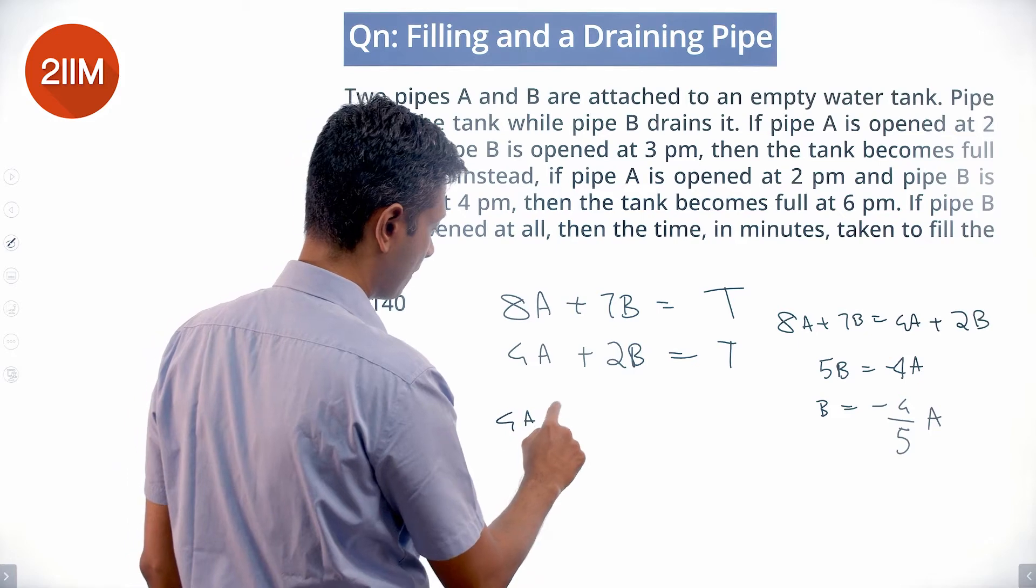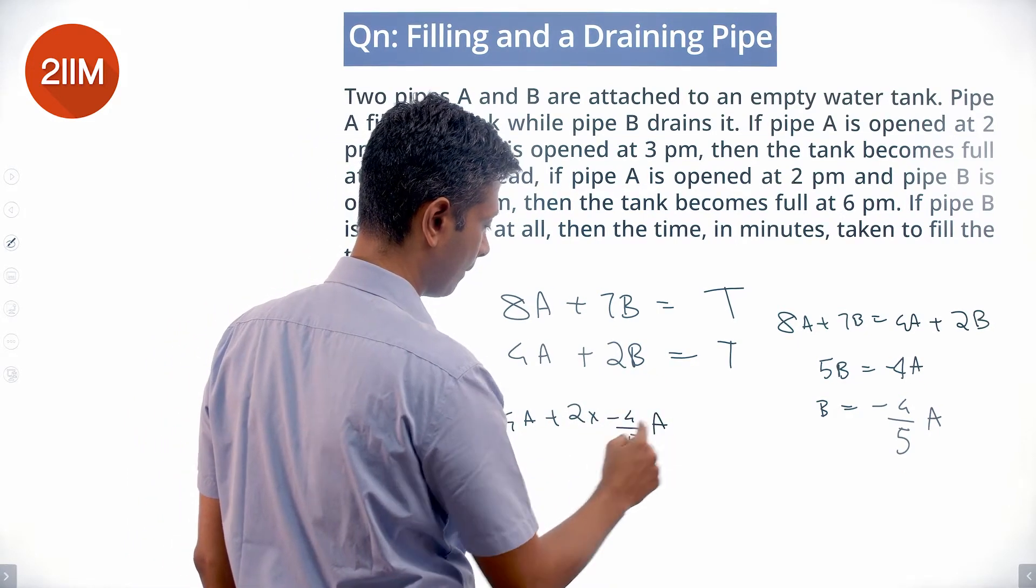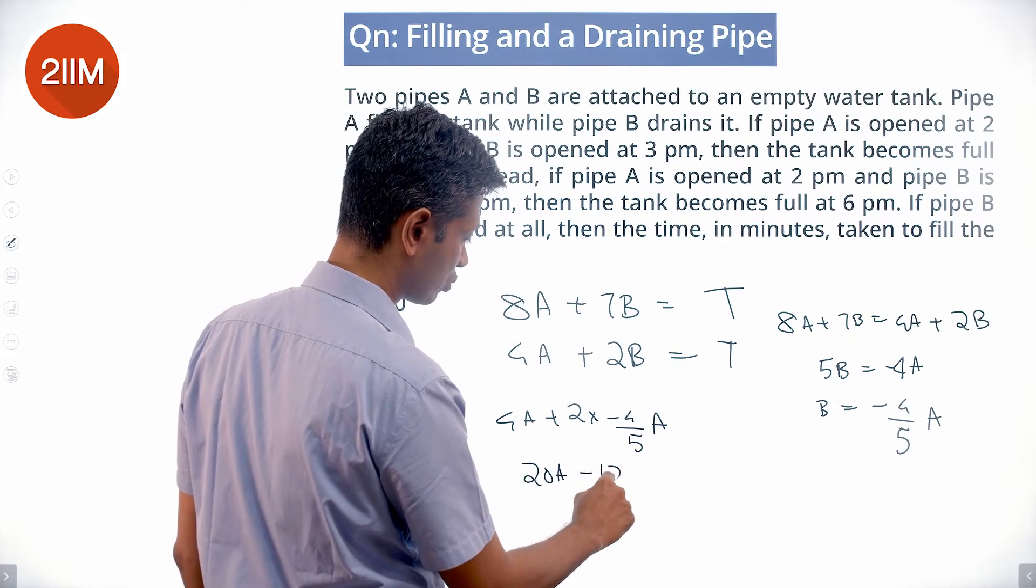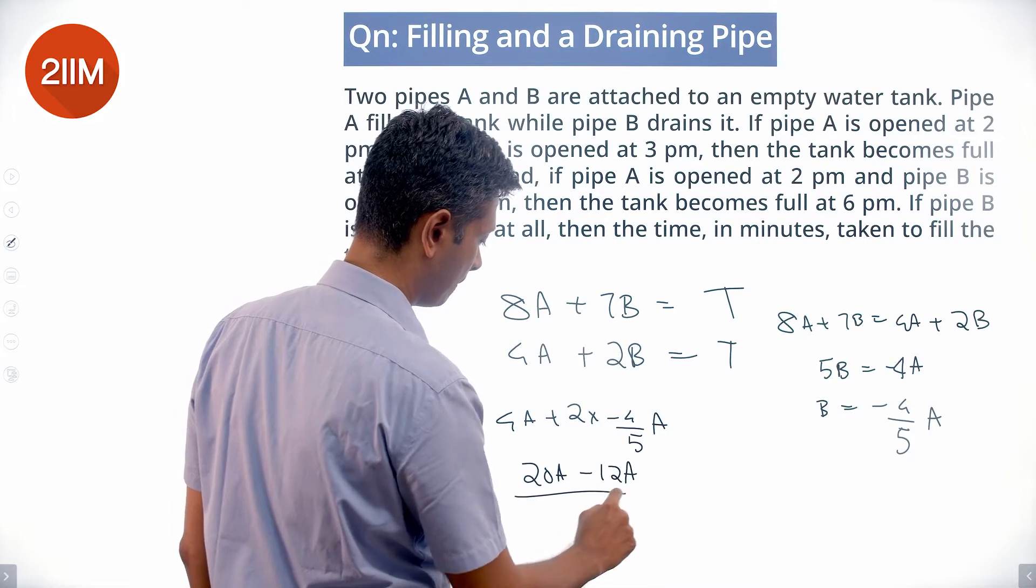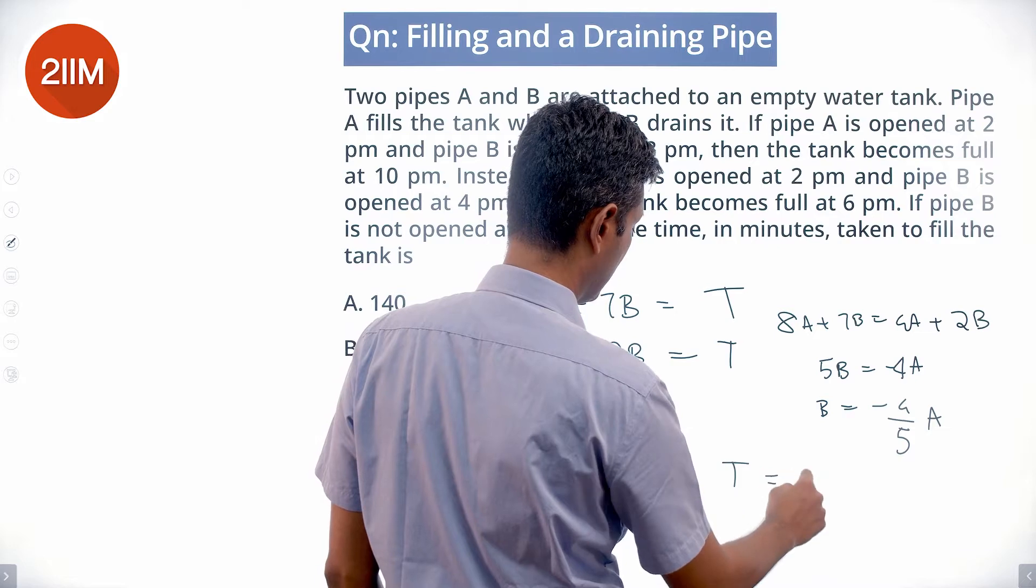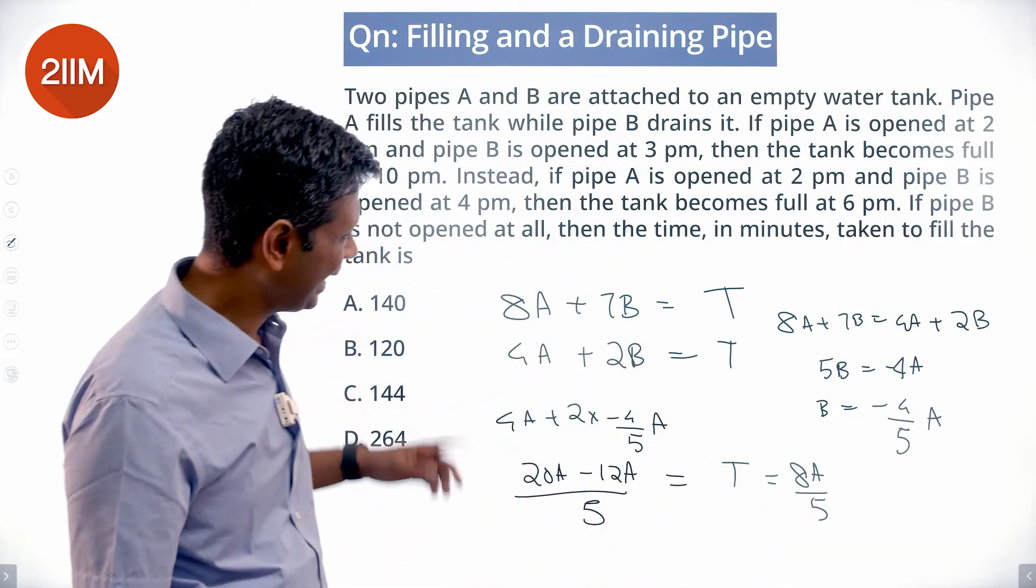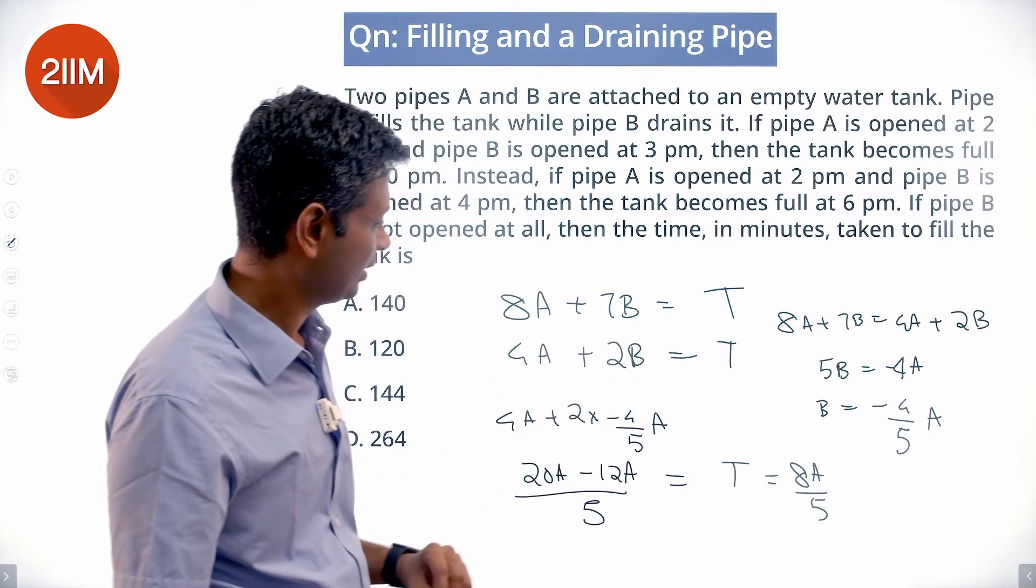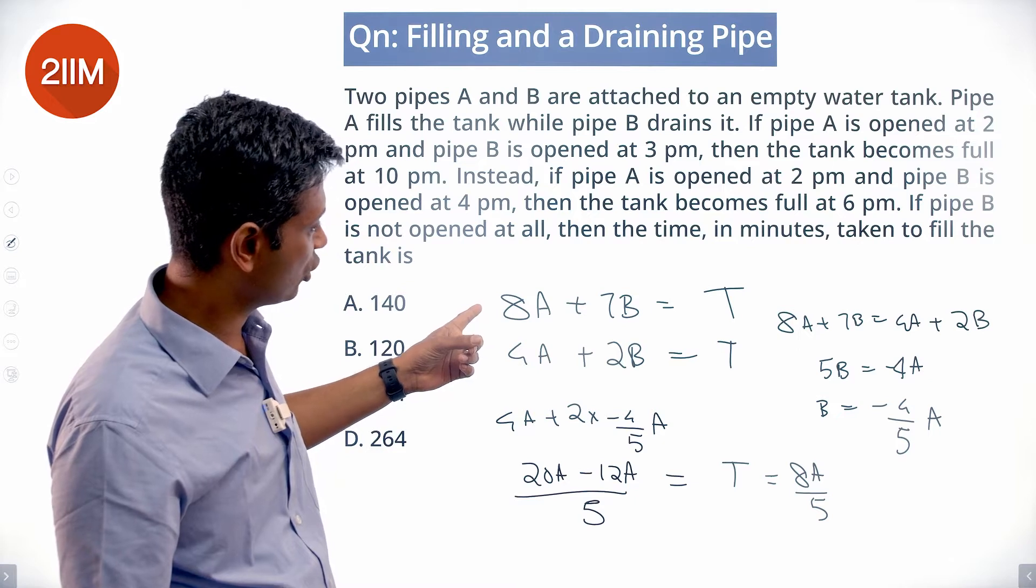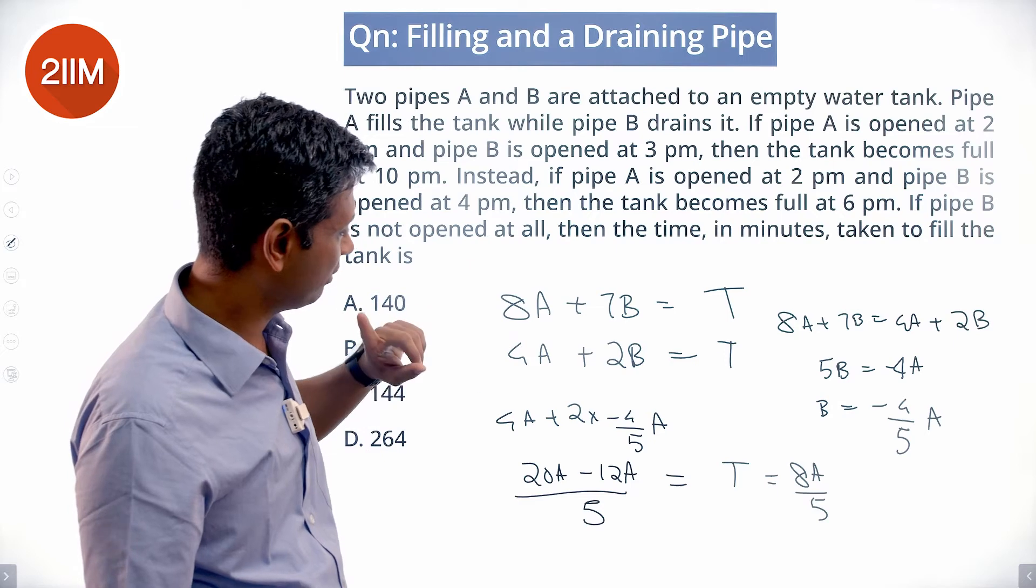4A plus 2 times minus 4/5 A equals 20A minus 8A over 5, which is 12A/5. The tank capacity is 12A/5. We can also write it as 8A plus 7B: 8A minus 7 times 4/5 equals 8A minus 28 over 5.